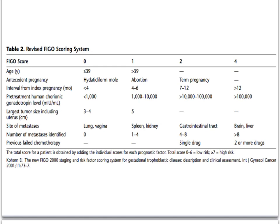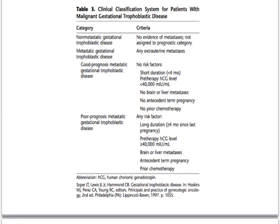In addition to the risk score, gestational trophoblastic disease can be divided into non-metastatic and metastatic. Non-metastatic gestational disease has no evidence of metastases and is therefore not assigned to a prognostic category. Metastatic GTD includes any extra-uterine metastases. Good prognosis metastatic GTD has no risk factors — no mets to the brain or liver, not a term pregnancy, and no prior chemotherapy. Poor prognosis is defined by any of those risk factors: long duration since the pregnancy, a pre-therapy HCG level greater than 40,000, brain or liver mets, a term pregnancy leading into it, or prior chemotherapy.